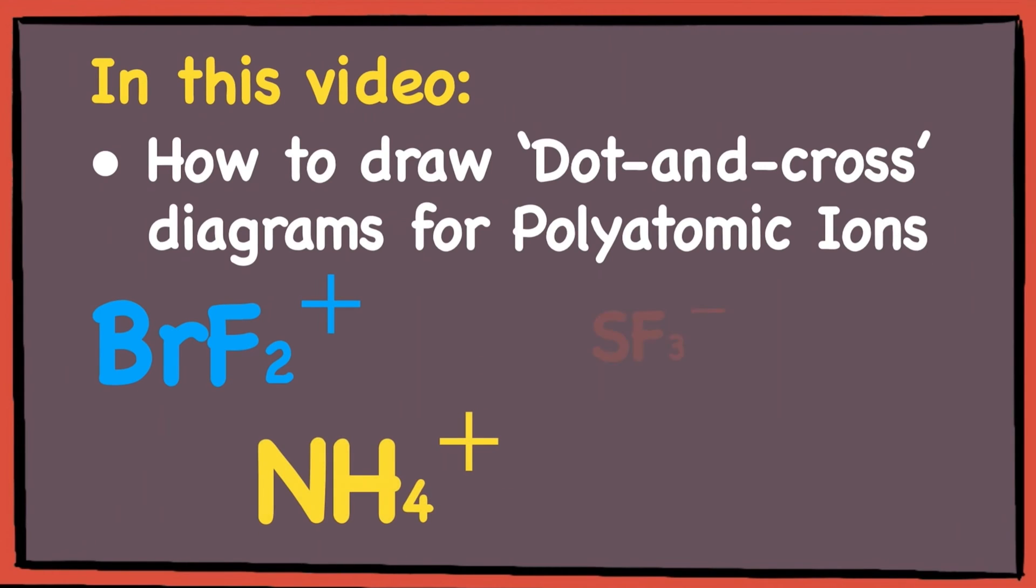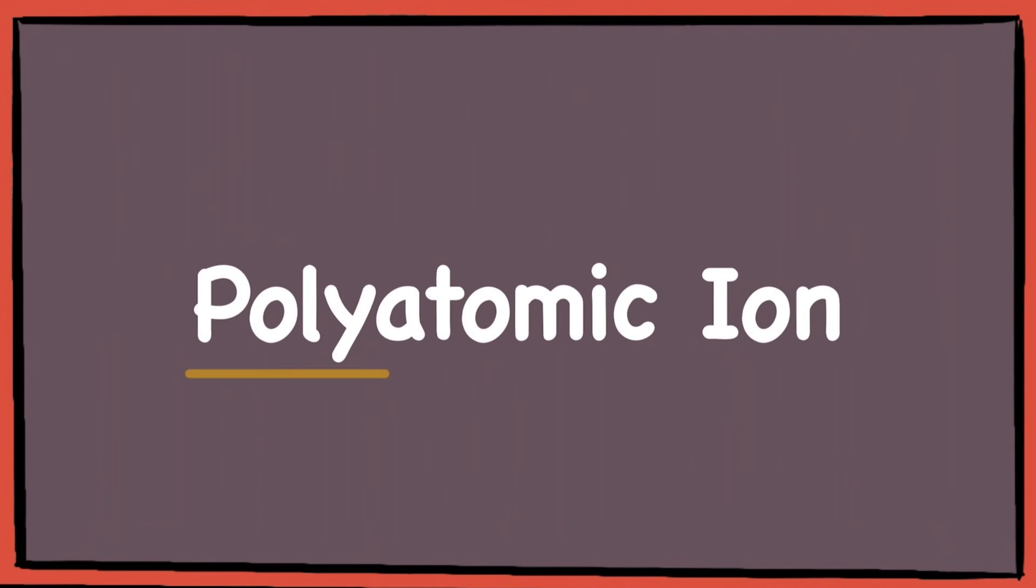How to draw dot-and-cross diagrams for polyatomic ions. Poly is a Greek word which means many in English. So a polyatomic ion is an ion which contains more than one atom.